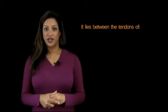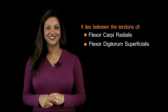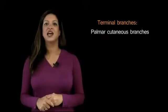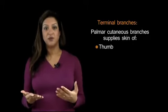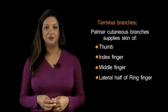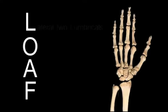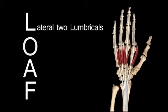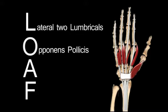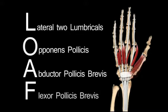The median nerve itself goes through the carpal tunnel, lying underneath the flexor retinaculum at the wrist, between the tendons of flexor carpi radialis and flexor digitorum superficialis. The median nerve then divides into its terminal branches. It has palmar cutaneous branches that supply the skin of the thumb, the index, the middle, and the lateral half of the ring finger. The other terminal branch is the motor or recurrent branch of the median nerve, which supplies the LOAF muscles: L for the lateral two lumbricals, O for opponens pollicis, A for abductor pollicis brevis, and F for flexor pollicis brevis.